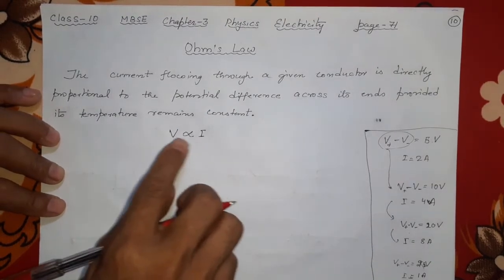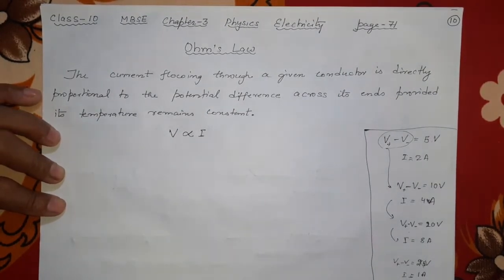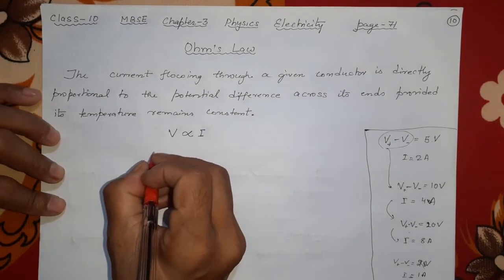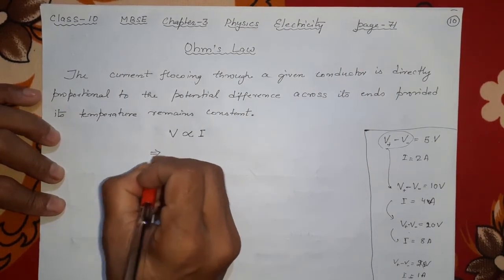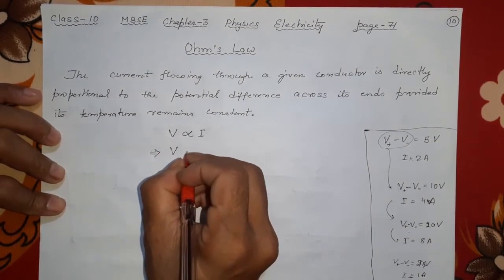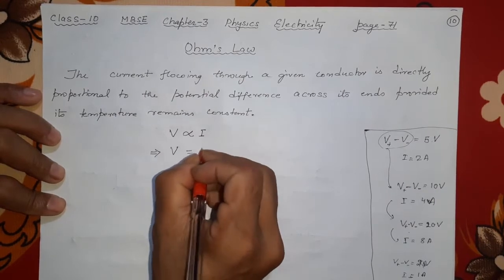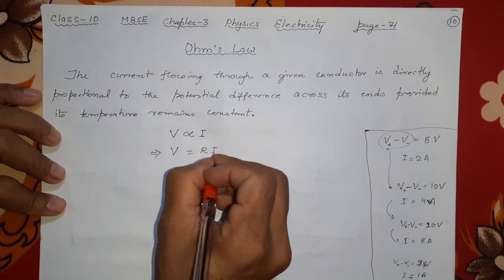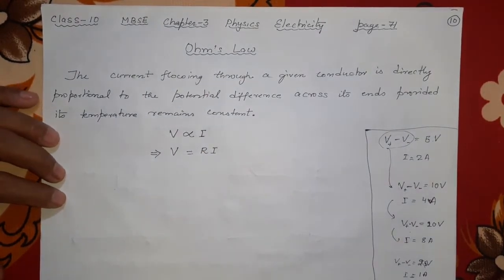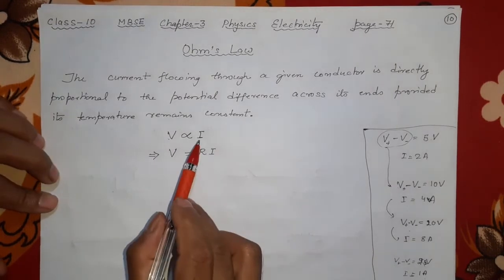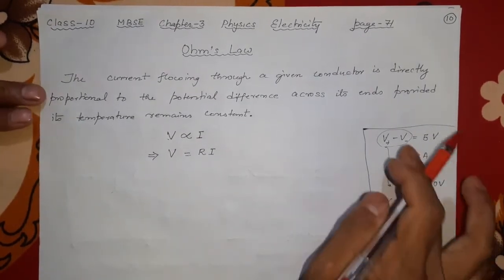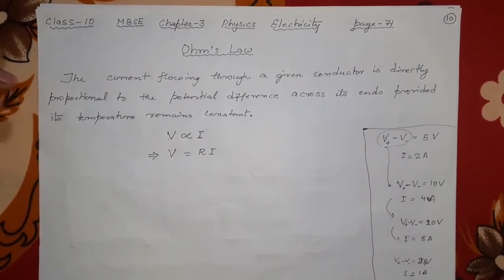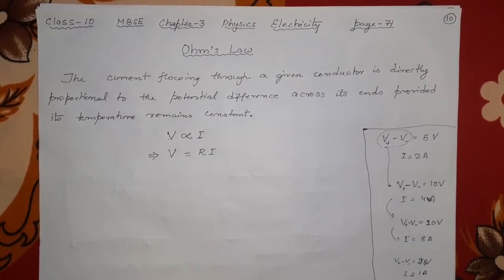V is not equal to I because their units are also different. So there is a constant which will relate them together, and that constant is resistance R. Voltage decides how much current will flow — that is true. But there is another important thing which also decides how much current flows, and that is resistance.